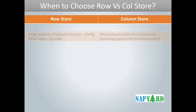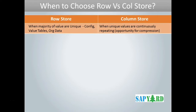When you know that most data would be unique, like in the config tables or the value tables — for example, company code data or plan data — which are unique or non-repetitive, go for the row store. When you know that there would be repetition of data in the table, meaning you have opportunity for compression, in such cases go for column store.